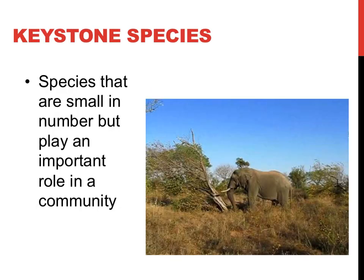Within a community, every organism fills an important role. Some organisms, referred to as keystone species, can be very small in number within a community but play a ridiculously important role in shaping an ecosystem. The elephant shown in the picture to the right is an example of such a keystone species.